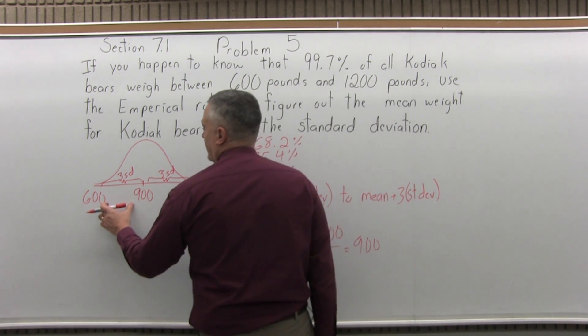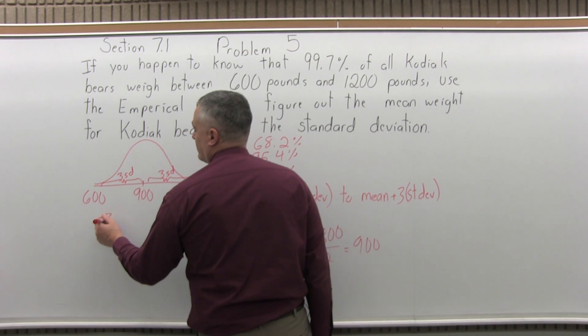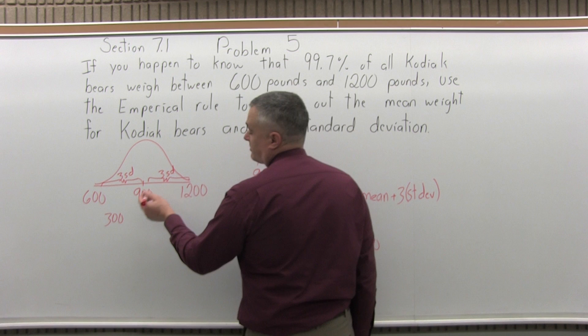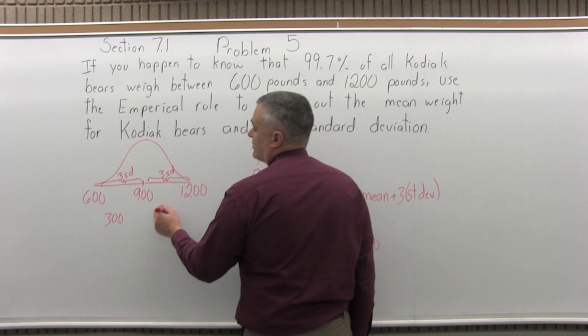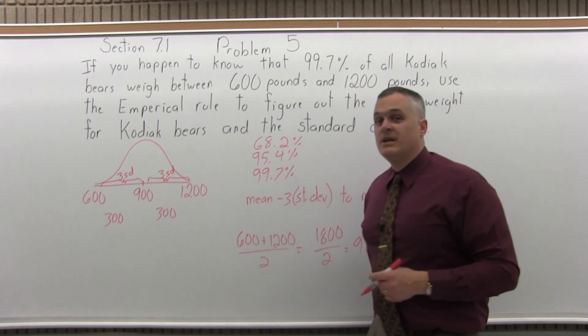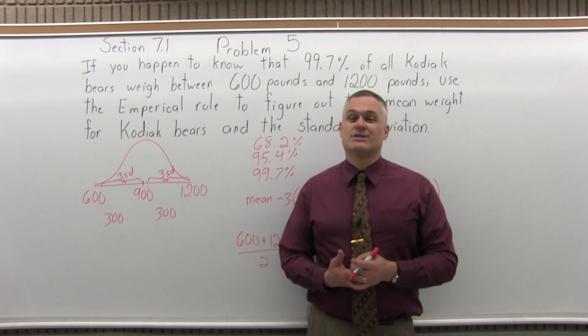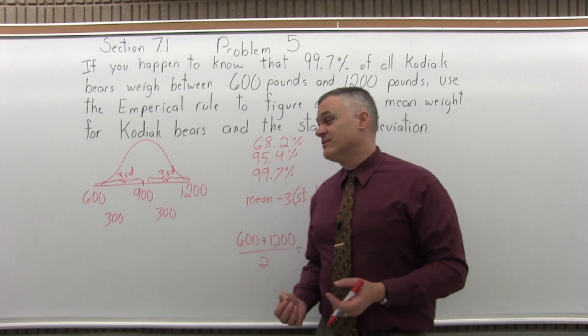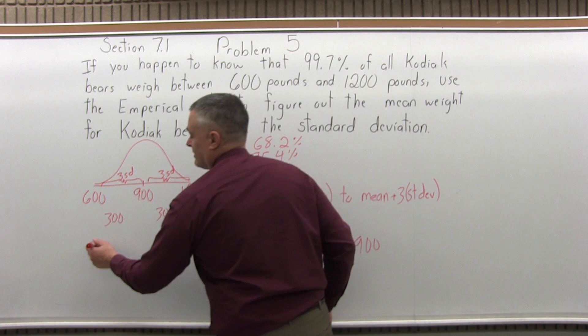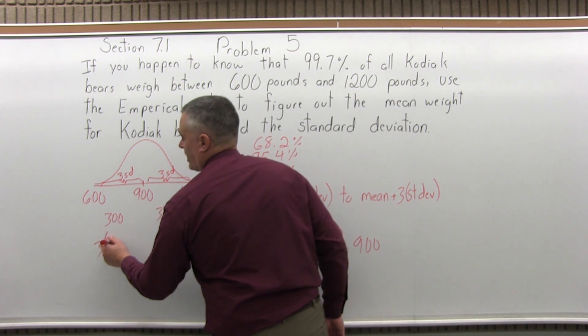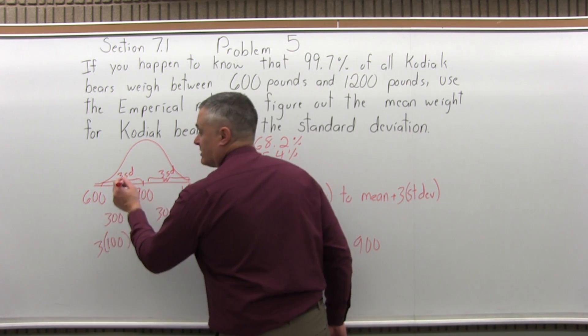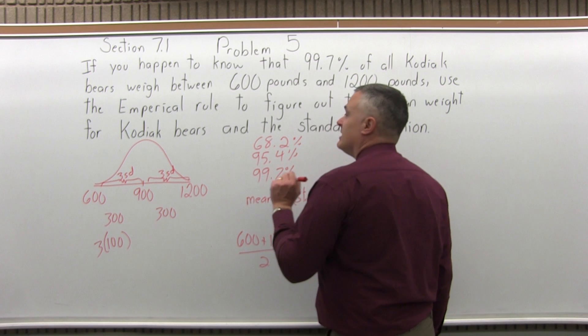Well, between 900 and 600 is 300, and also between 900 and 1200 is 300. So that 300 is three standard deviations. If three standard deviations is 300, each individual standard deviation is 100. Three times 100 will give you 300. So each standard deviation is 100.